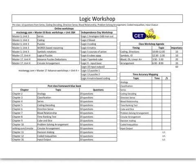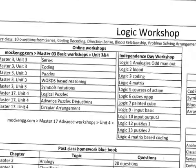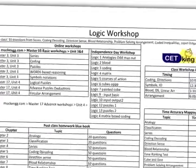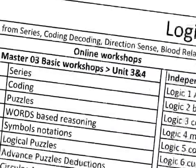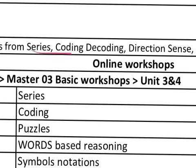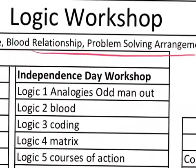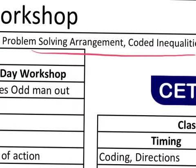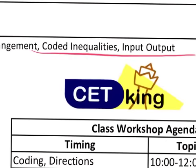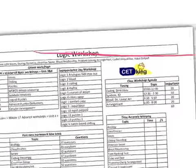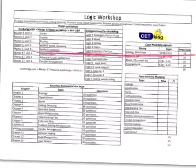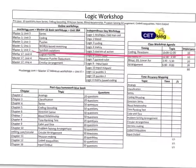Alright, so now we are going to talk about the logic section, which is the most important part of the CET paper. Pre-class homework: do 10 questions each of these topics — series, coding-decoding, direction sense, relationship, problem solving arrangement, coded inequalities, and input-output — just to get an idea about what kind of questions are coming in the exam.